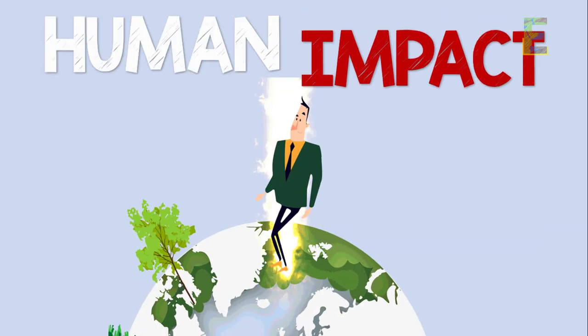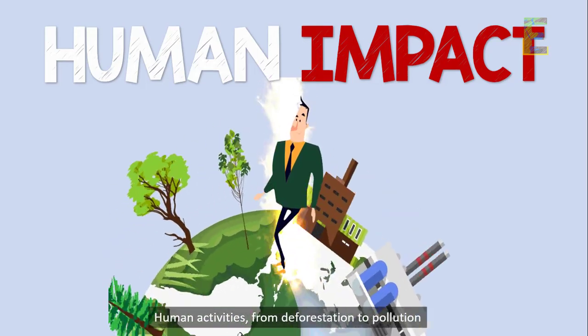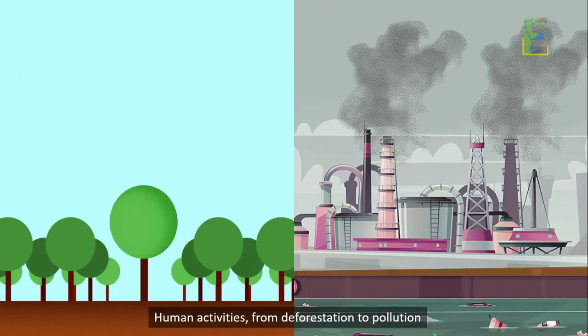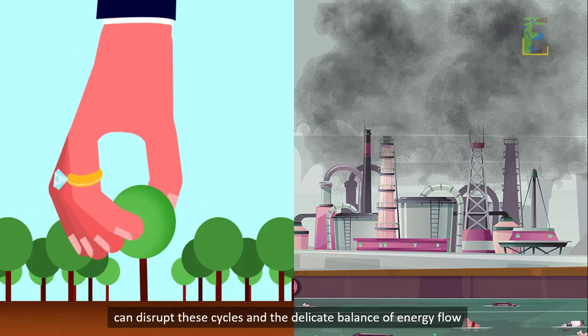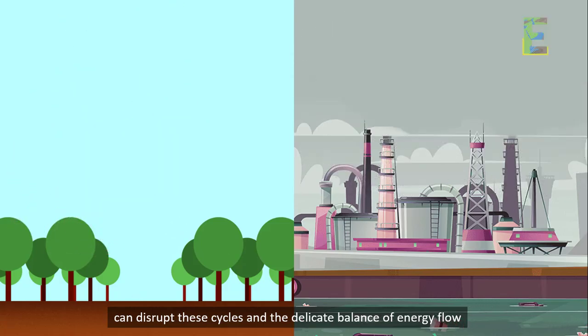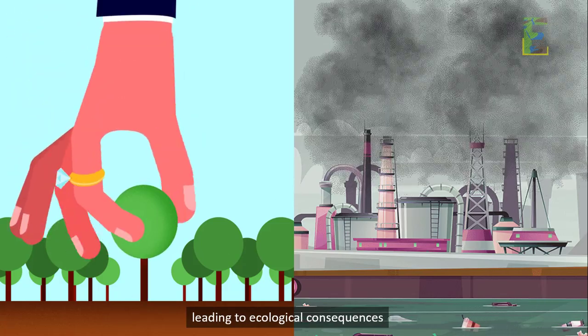Human impact: human activities, from deforestation to pollution, can disrupt these cycles and the delicate balance of energy flow, leading to ecological consequences.